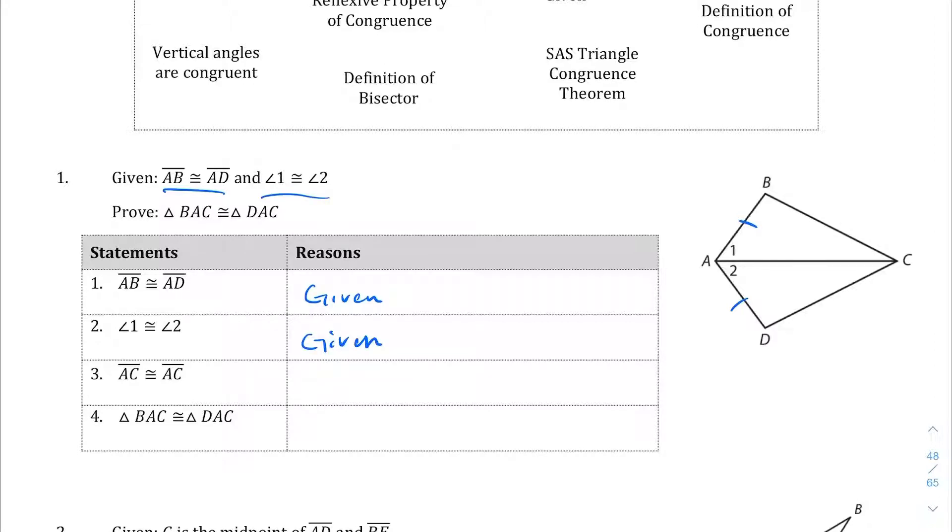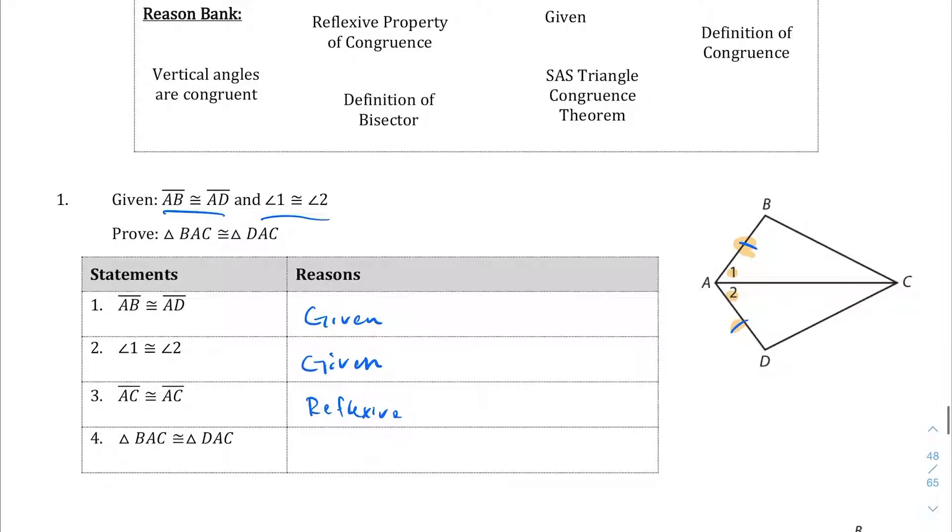So we have already proved we have a side that is congruent. We have an angle that is congruent. Now we just need a side. And we can see here that we are told AC is congruent to AC because they share that side. And this is just going to be another reflexive statement here. Reflexive. What was it? Reflexive property of congruence.